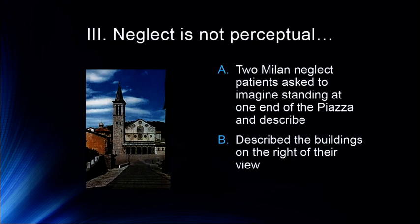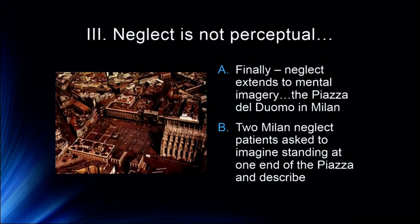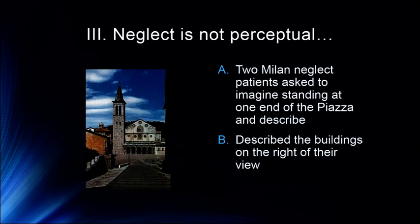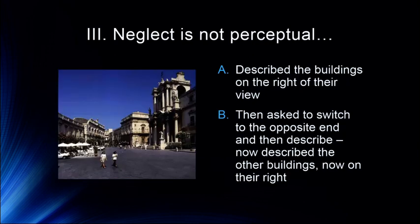The patients would always describe the buildings on the right of their view. So if they're standing facing the cathedral, they'll describe everything on the right-hand side of the piazza. If they're asked to move to the cathedral steps and describe their view, they can then describe everything on the other side of the plaza. So they could imagine or picture the entire piazza, but in their memory and internal imagery they were only attending to what was on the right-hand side, actually ignoring and not describing what was on the left.